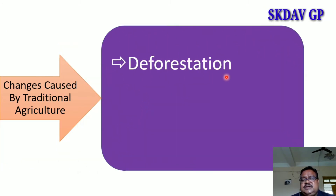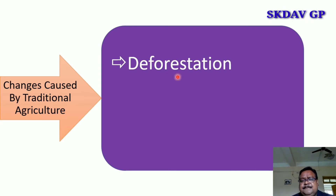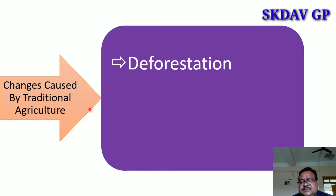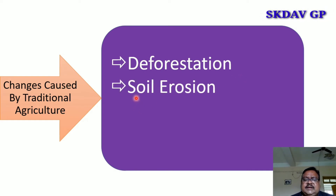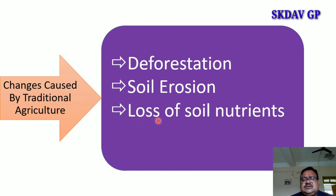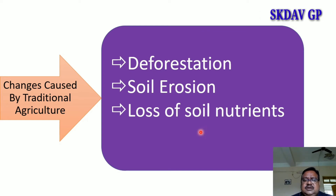First, let us see the changes caused by traditional agriculture. First is deforestation — when we expand agricultural land, we need to cut trees and clear forests. The more we expand agricultural land, the more deforestation occurs. Secondly, soil erosion will also occur. Then, loss of soil nutrients — the top soil layer contains nutrients that are washed away, leading to loss of soil nutrients.